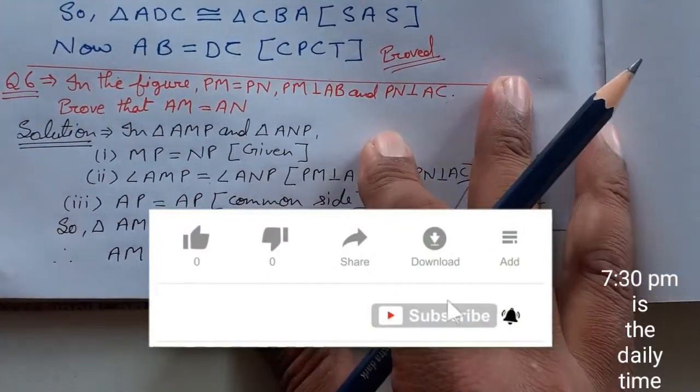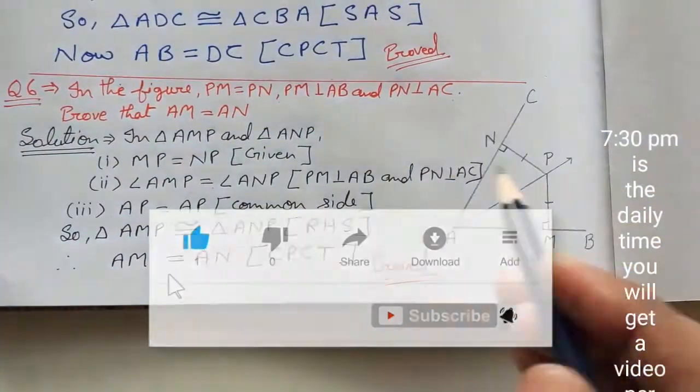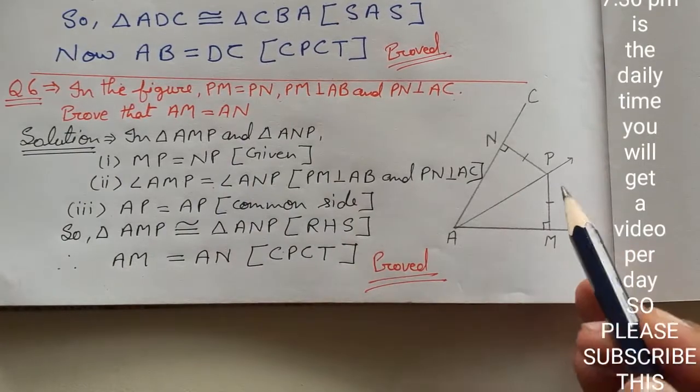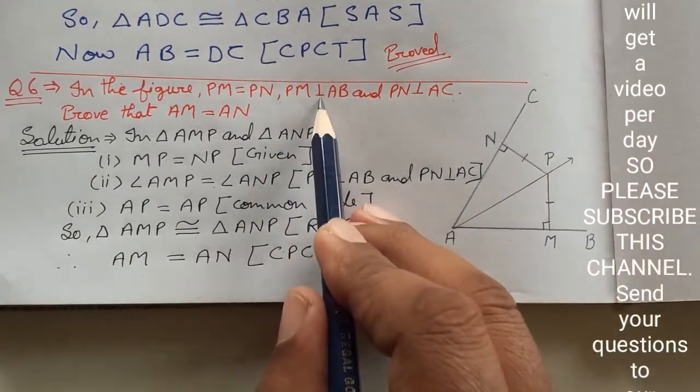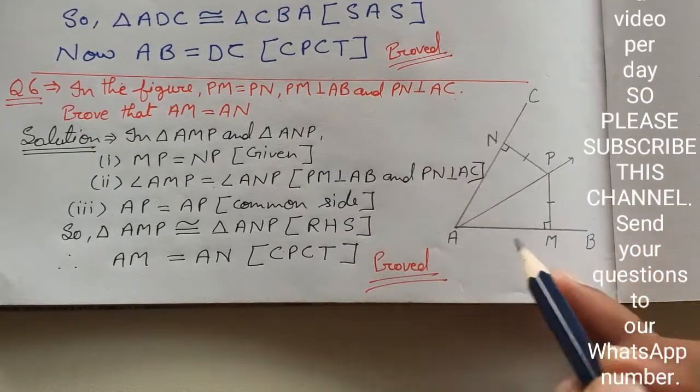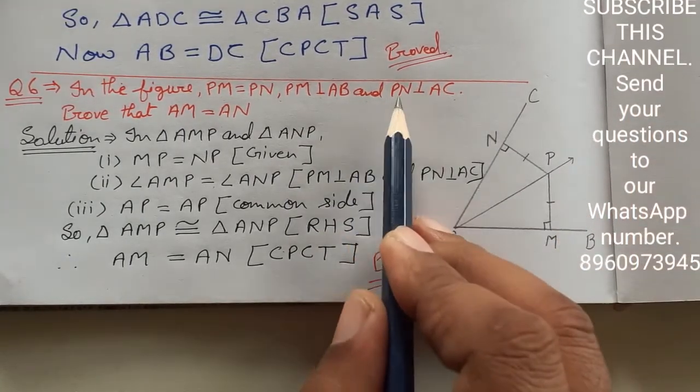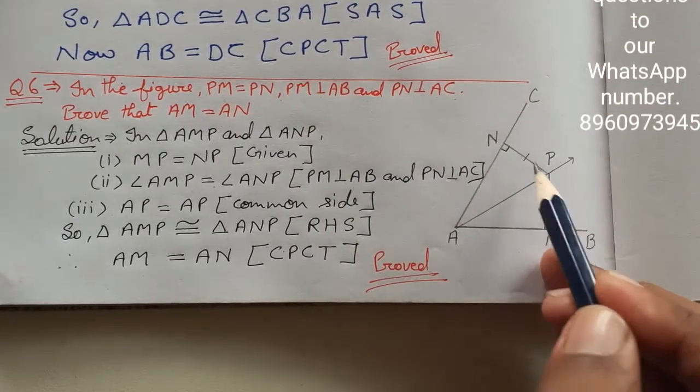Hello everyone, now we are going to do question number six of exercise 13B. In the figure, PM equals PN, PM is perpendicular to AB, and PN is perpendicular to AC.